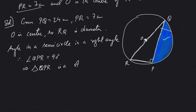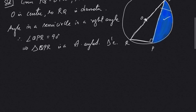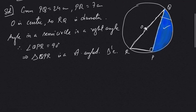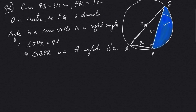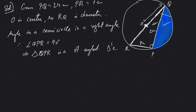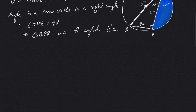Angle in a semicircle is a right angle, therefore angle QPR will be 90 degrees, which implies that triangle QPR is a right-angled triangle. We have PR given as 7 centimeters and PQ given as 24 centimeters. To find the radius of this circle, we first need to find the diameter RQ.